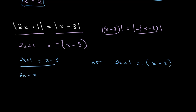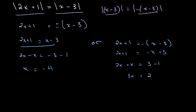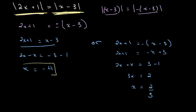Solving the first case: 2x minus x equals minus 3 minus 1, giving us x equals minus 4. For the second case: 2x plus 1 equals negative x plus 3, so 2x plus x equals 3 minus 1, giving 3x equals 2, and x equals 2 over 3. So in this case we get two answers: x is either equal to negative 4 or x is equal to 2 over 3.